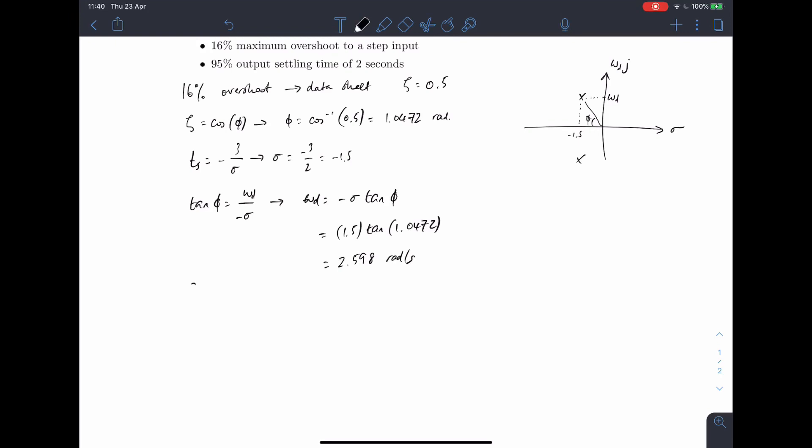So our two poles, second order poles, we've got S equals minus 1.5 plus 2.598j and S equals minus 1.5 minus 2.598j.